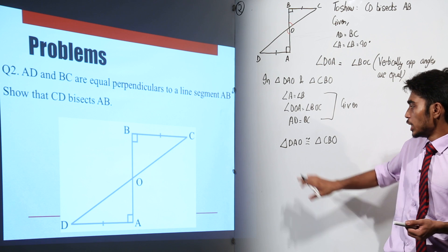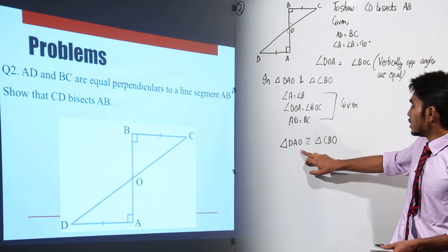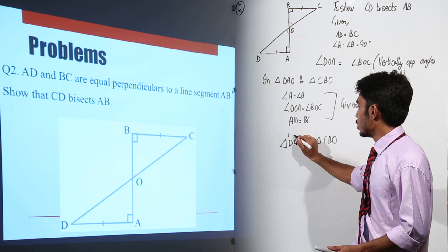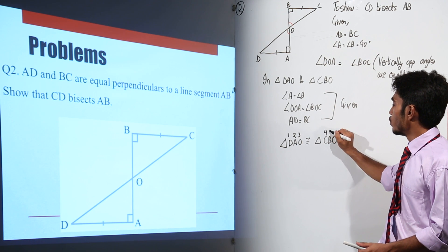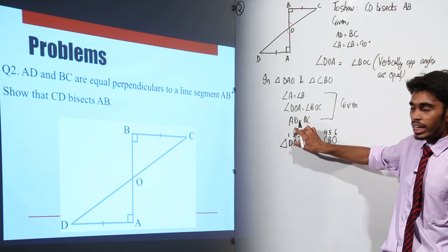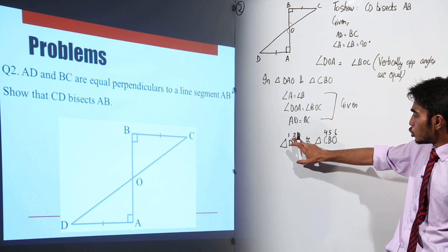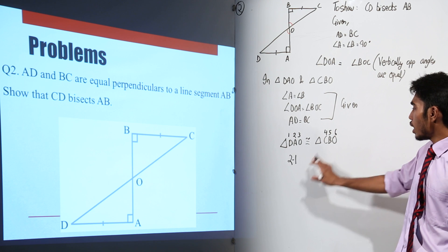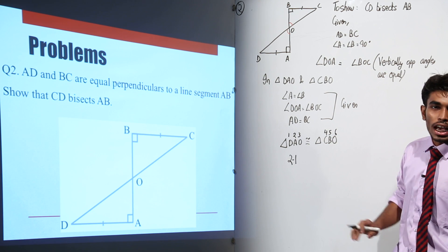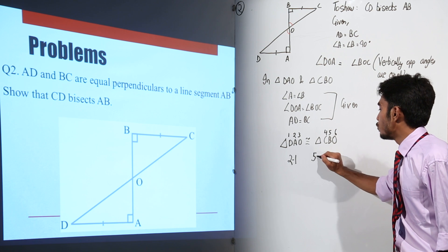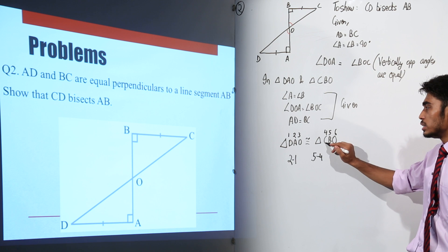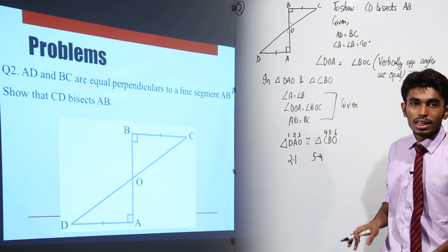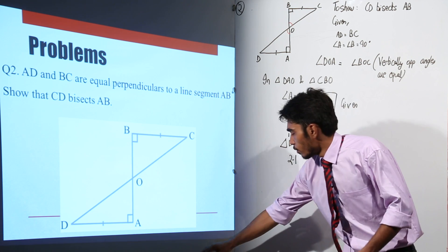Now let us check whether we have written the sequence in the right order. I can say that AD is equal to BC. Let us verify — we will label the vertices 1, 2, 3, 4, 5, 6. How can I get AD? I can get AD from 2 to 1. From the other side, I should get 5 to 4, which is nothing but BC — and that was what I needed. So the sequence in which we have written the congruence condition is definitely correct. We have verified this.